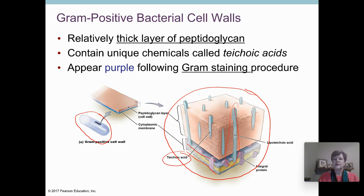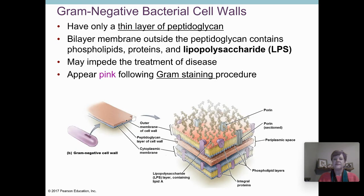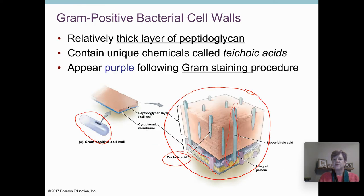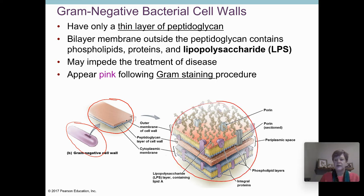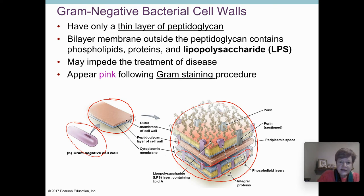Now when we go to the gram negative cell wall, I want to flip back and forth — you can see both here. Here's the gram positive and here's the gram negative. Again, we're cutting a section from a cell and looking at the close-up. You see the cell membrane here at the bottom, and then a really thin layer — this is the thin layer of peptidoglycan.